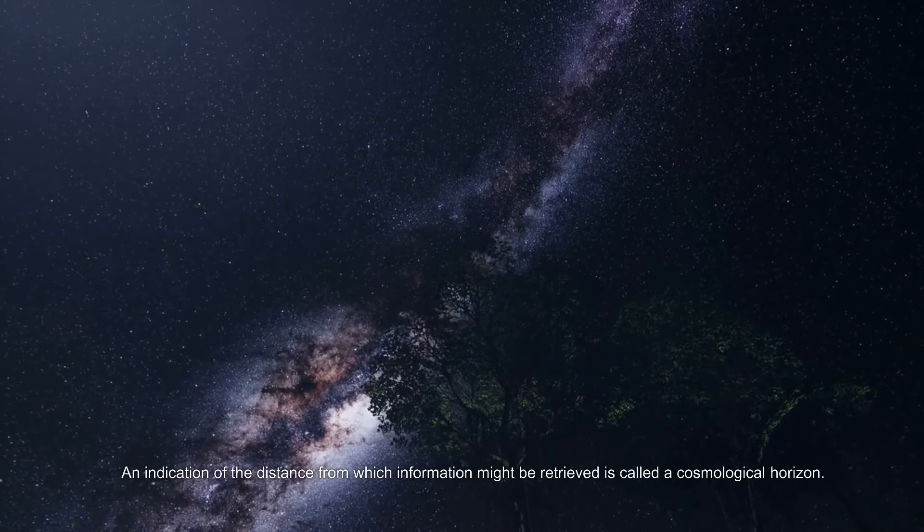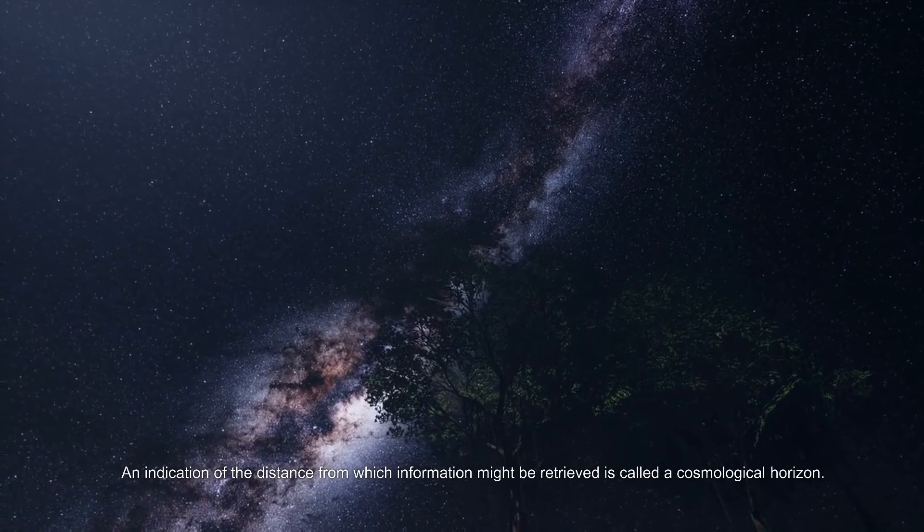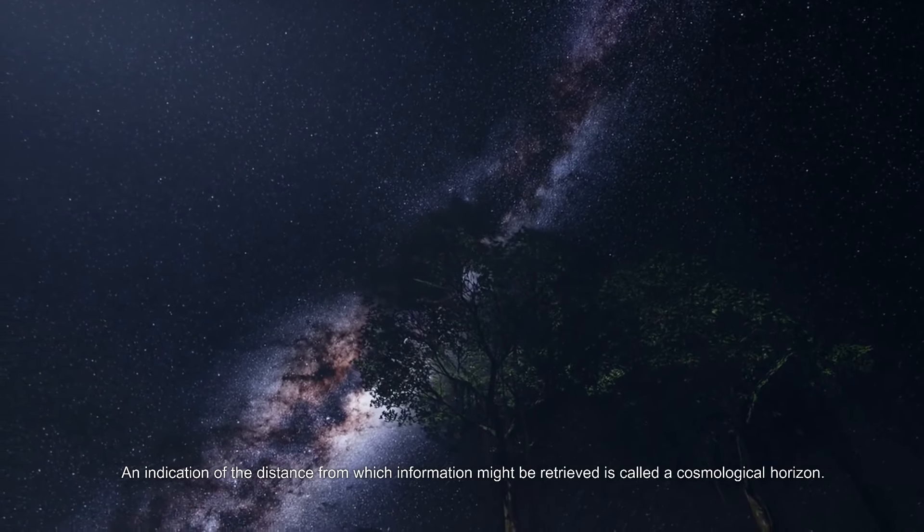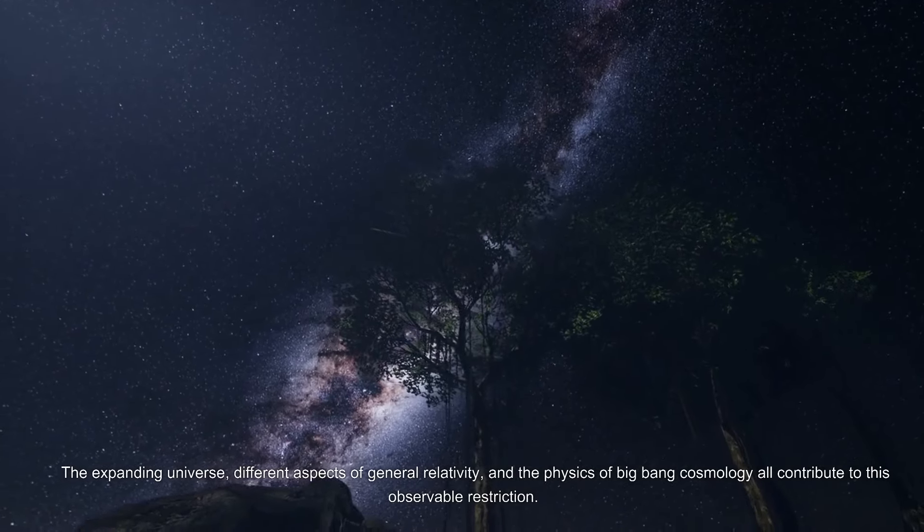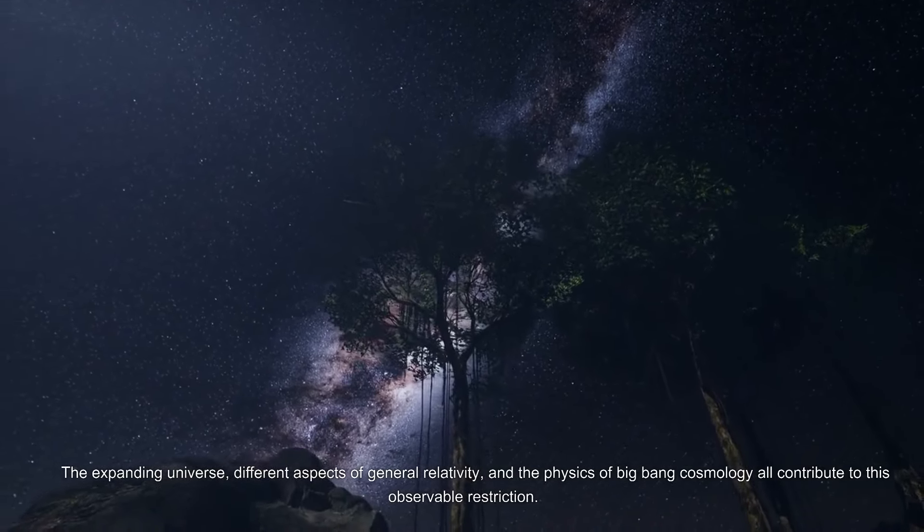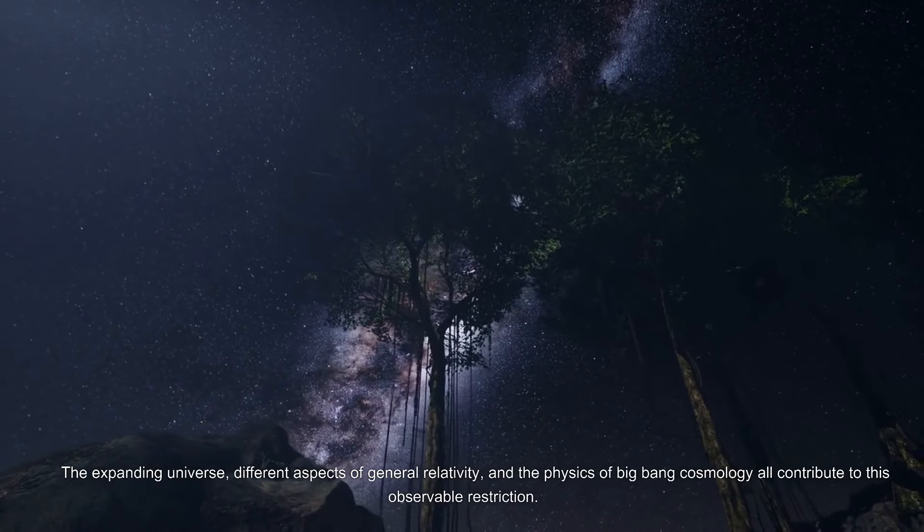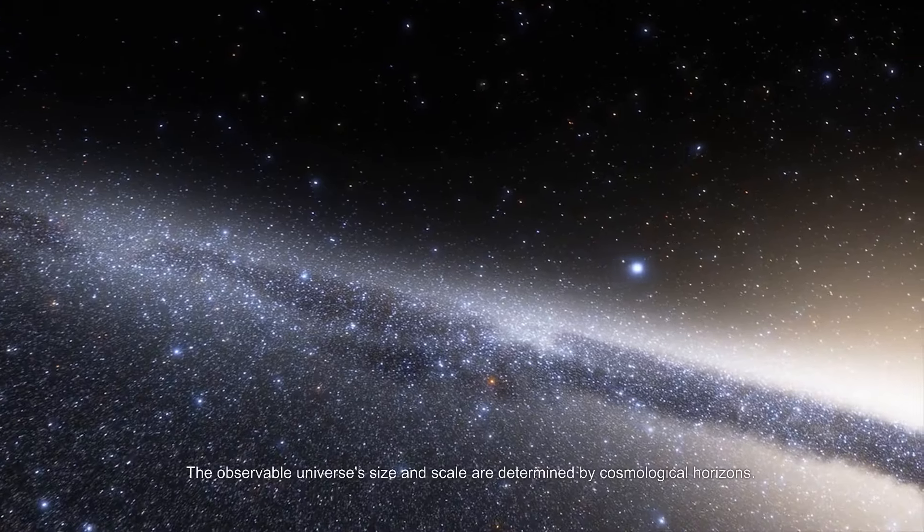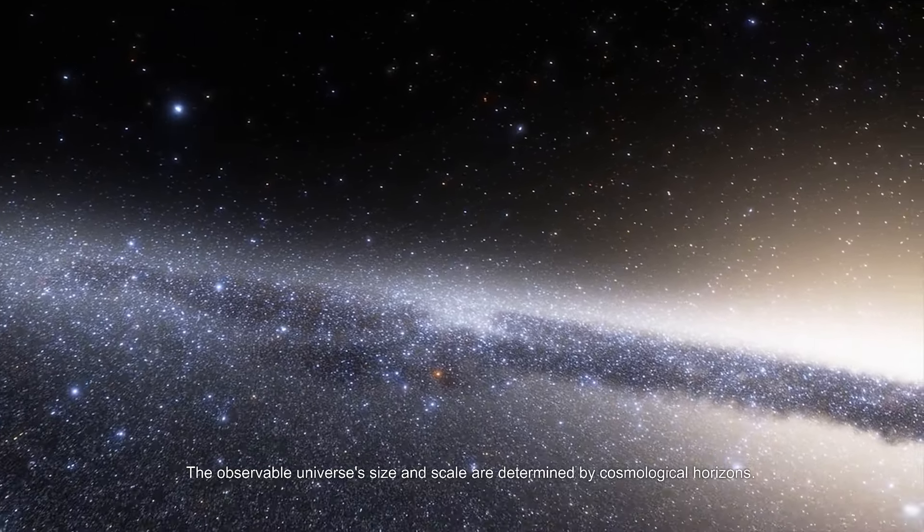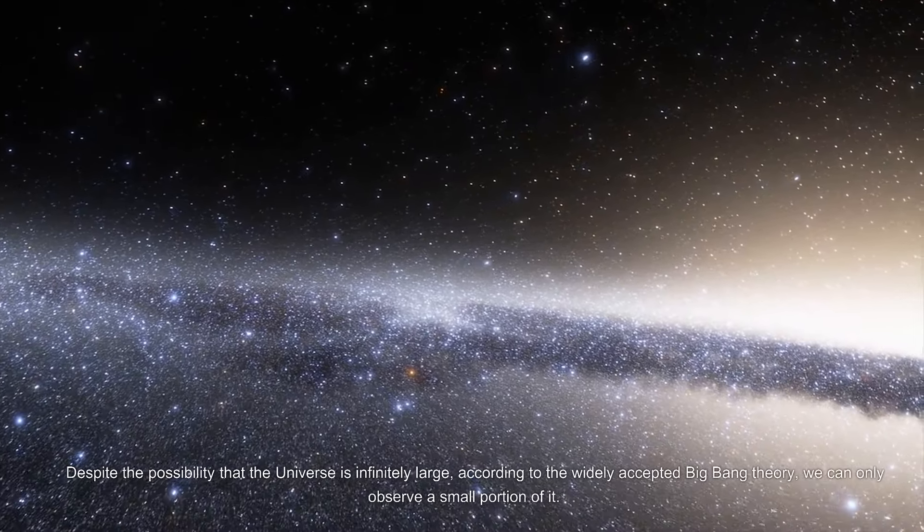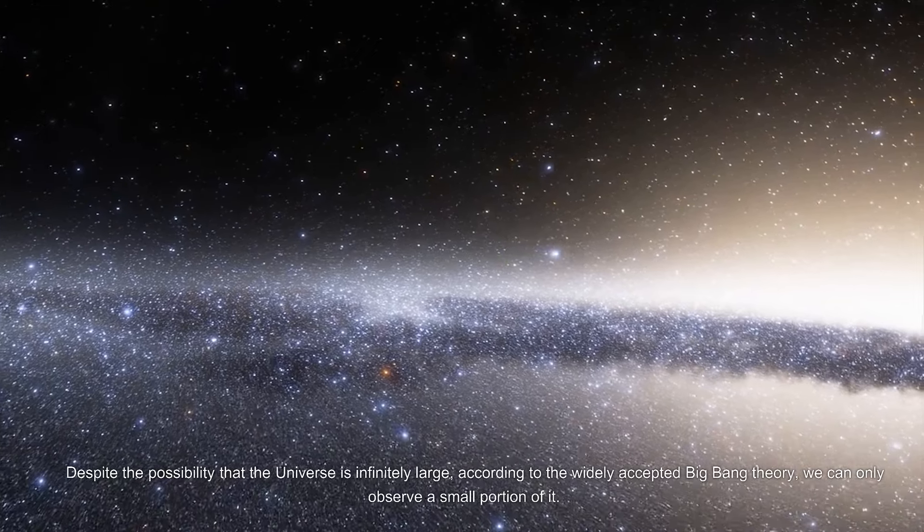An indication of the distance from which information might be retrieved is called a cosmological horizon. The expanding universe, different aspects of general relativity, and the physics of Big Bang cosmology all contribute to this observable restriction. The observable universe's size and scale are determined by cosmological horizons.